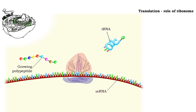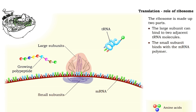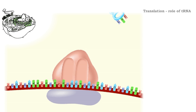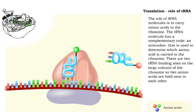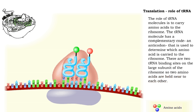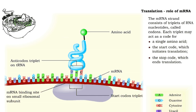A single ribosome consists of two components that bring together mRNA and amino acids. Its purpose is to allow for the reading of the sequence within mRNA, resulting in a sequence of amino acids. The role of the tRNA molecule is to move amino acids close together within the ribosome. Triplets of RNA nucleotides, called codons, on the mRNA molecule determine the sequence of amino acids.